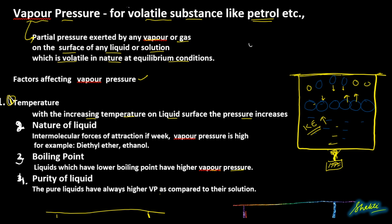The second factor is the nature of the liquid. If the intermolecular forces of attraction are weak, vapor pressure is high. For example, diethyl ether and ethanol have weak intermolecular forces of attraction, so they have high vapor pressure. Whereas water has quite low vapor pressure because of hydrogen bonding in it.